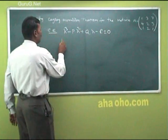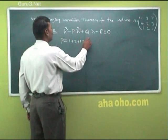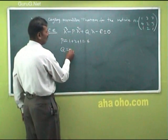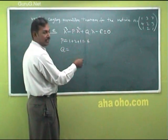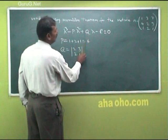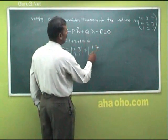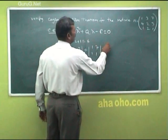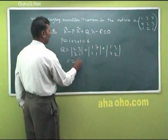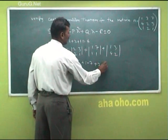P equals the sum of the leading diagonal elements: 1+2+1 = 4. Q equals the sum of the minors of the leading diagonal elements: determinants of [2,3;2,1] plus [1,7;1,1] plus [1,3;4,2], giving (2−6) + (1−7) + (2−12) = −4 − 6 − 10 = −20.